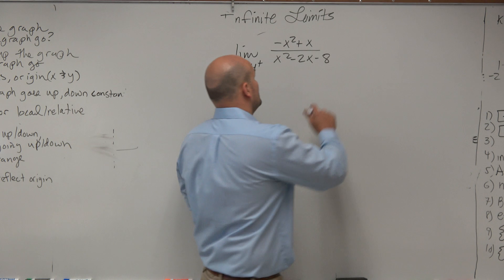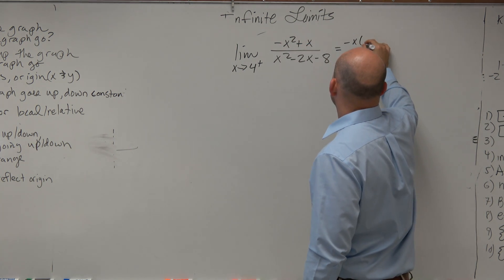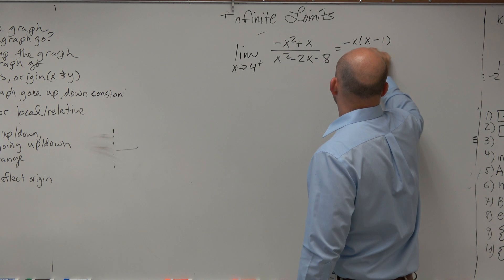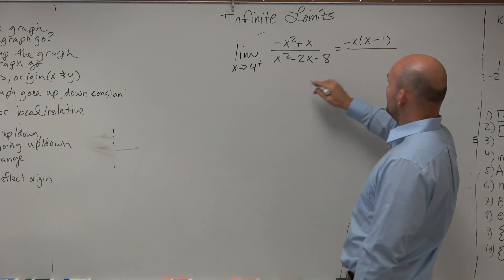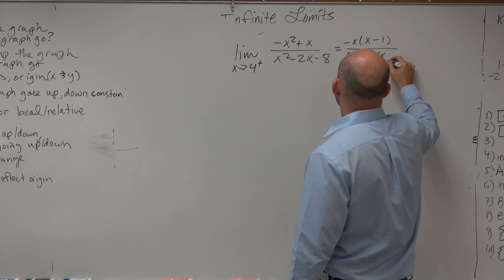So next thing is we look into factoring. Well, I could factor out a negative x, and I'd have x minus 1. Factoring out the denominator, let's see, I could do x minus 4 times x plus 2.